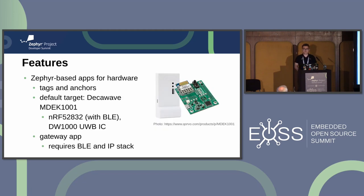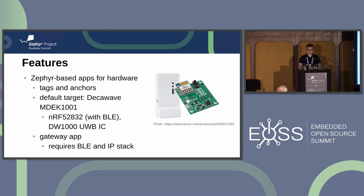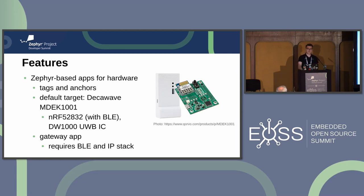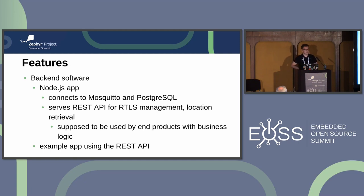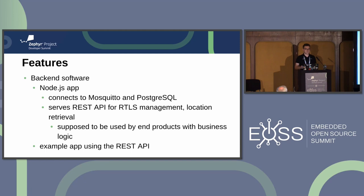The solution consists of two major parts. First, a set of Zephyr-based apps for tags and anchors, targeting by default the DecaWave MDK 101 Devkit — the most popular UWB devkit on the market — which runs on the NRF52 and UWB module. Thanks to Zephyr, these apps have no direct dependencies on this exact board and are easily portable to any target with BLE and a DW1000 chip. There's also a gateway app requiring BLE radio and an IP stack. The second part is back-end software developed by Sebastian: a Node.js app with a PostgreSQL database and Mosquitto MQTT broker, exposing a REST API for managing individual RTLS systems and accessing location data. There's also an example app using that API.